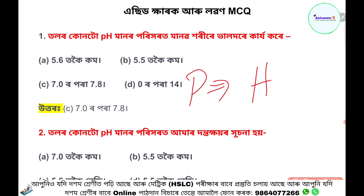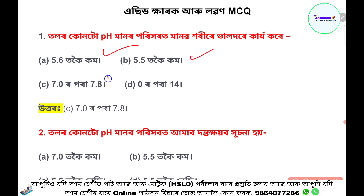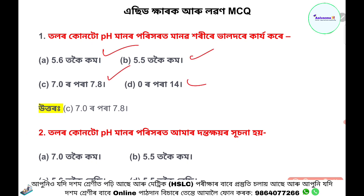pH means potential hydrogen. The options are 5.6, 5.5, 7.0, 7.8, and 0.14. This is the function of the potential hydrogen. The pH level is 7.0 or 7.8.